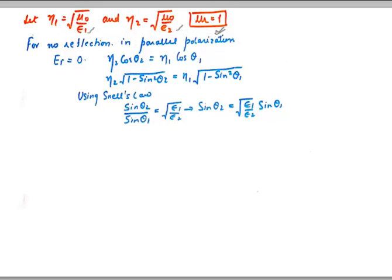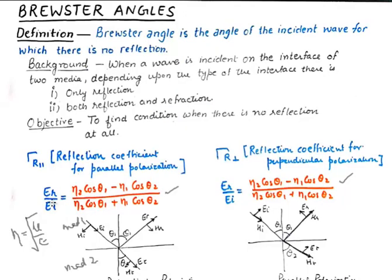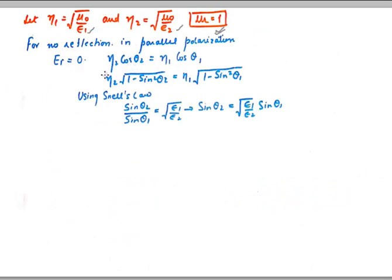Now, looking at the definition of reflection coefficient as the ratio of Er upon Ei, we do not want Er to be present because Brewster Angle is the angle of incidence for which there is no reflection. So if Er becomes zero, that will be the condition for Brewster Angle. We put Er equal to zero, which means making the numerator zero. The numerator has eta_2 * cos(theta_2) − eta_1 * cos(theta_1), so that gives us: eta_2 * cos(theta_2) = eta_1 * cos(theta_1).